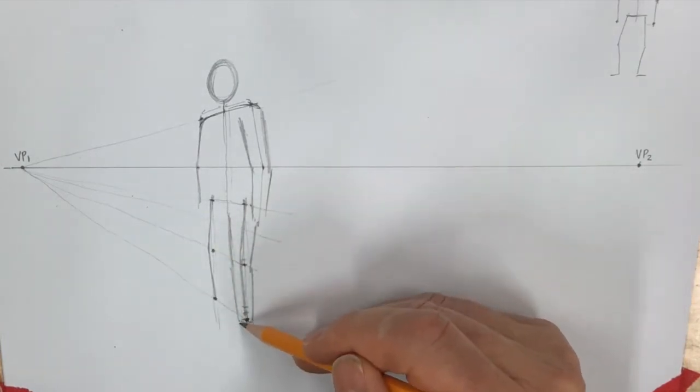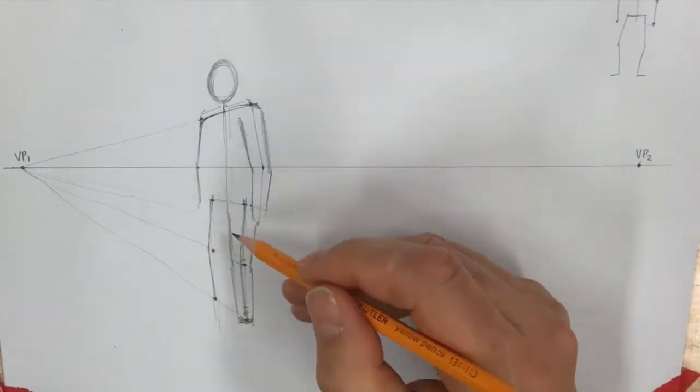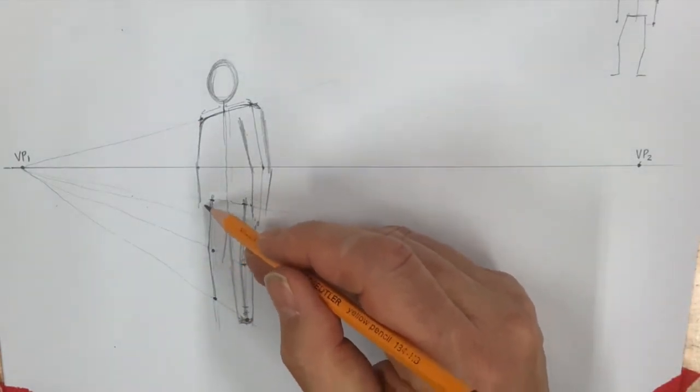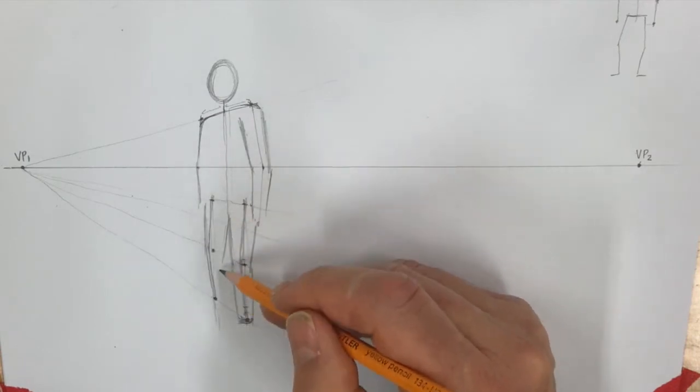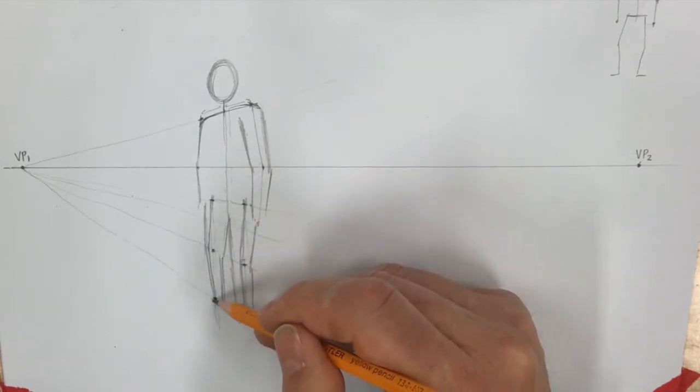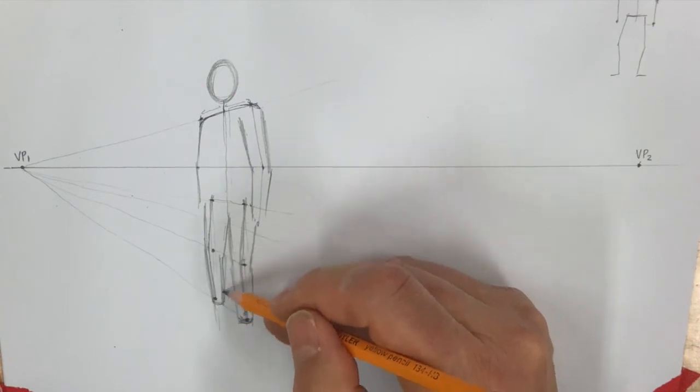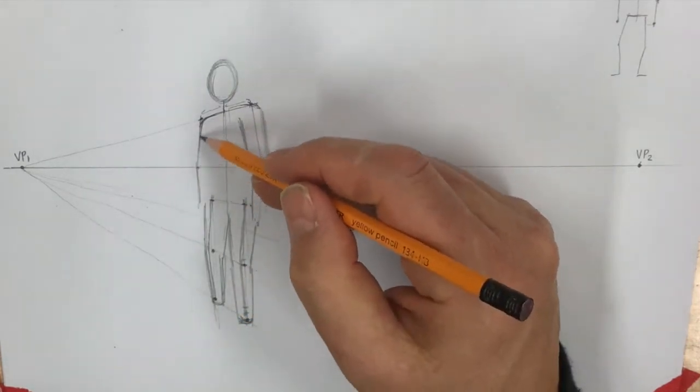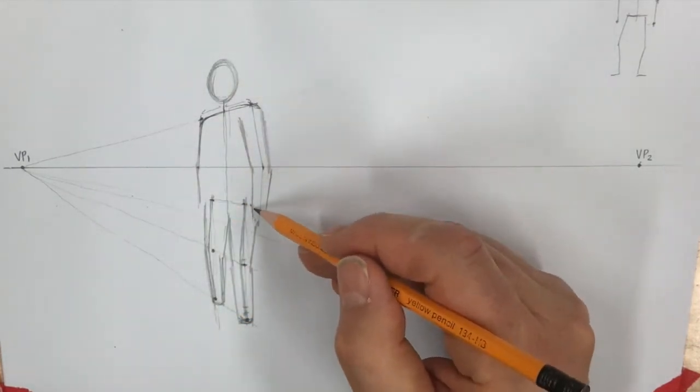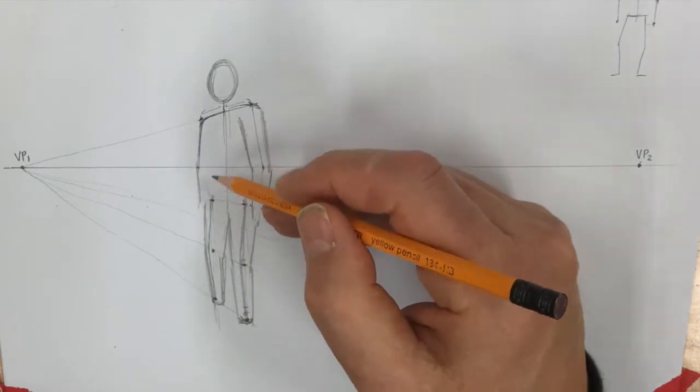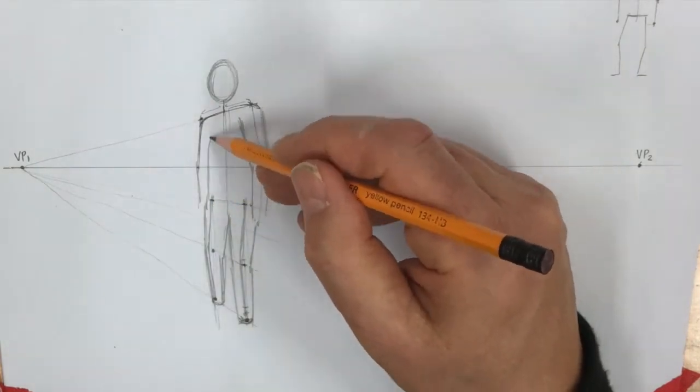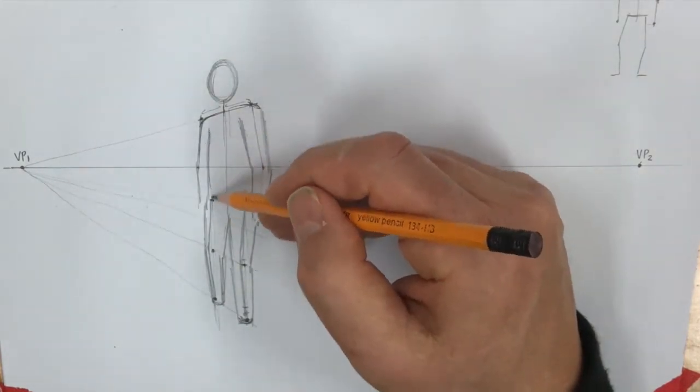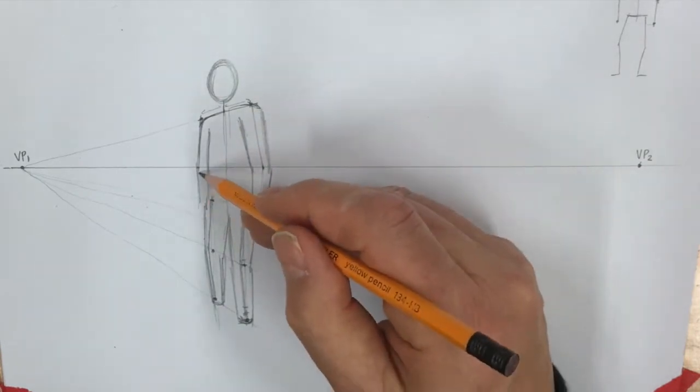So the thigh is going to be something like that, and as you can see it's also getting narrower as it gets to the bottom. I'll just put a little like it's his pants down there, and here, same thing, getting narrower towards the bottom.